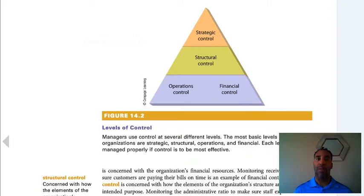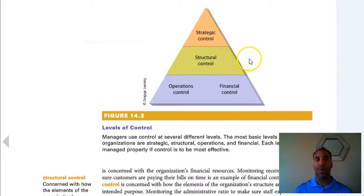Levels of control: managers use control at several different levels. The most basic levels of control in organizations are strategic, structural, operations, and financial. Each level must be managed properly if control is to be most effective. Strategic is at the top because this is top-level decision-making; structural is where tactical would be; and operations and financial control is where operational would be.